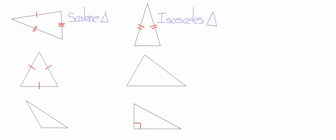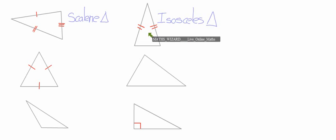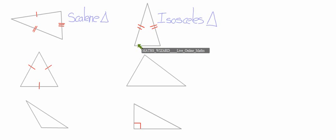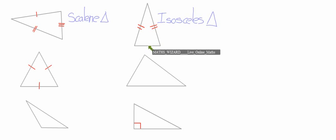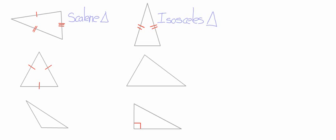Now, very important: when we have an isosceles triangle, you must remember that the two opposite angles of these two equal sides — in other words, opposite this side is this angle over here, and opposite this side is this angle over here — when we have our isosceles triangle, these two angles will be the same size. We can indicate this with tick marks. So when you see an isosceles triangle, straight away you know the two angles opposite these two sides are equal.